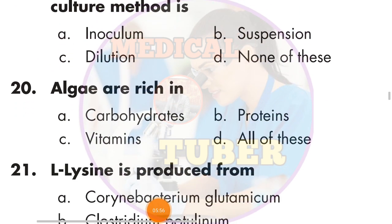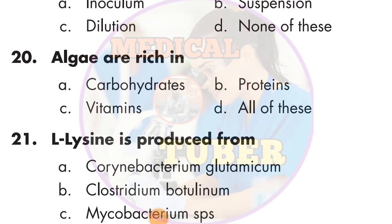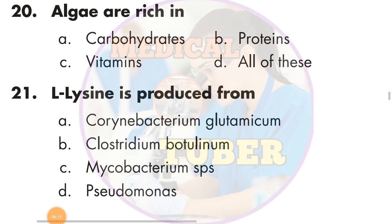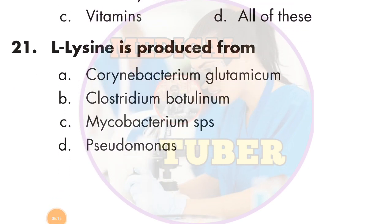Question number 19: The bacterial culture prepared by pure culture method. Question number 20: The bacterial culture — the answer is — autoclaving is done at 120°C. The correct answer is corynebacterium glutamicum.